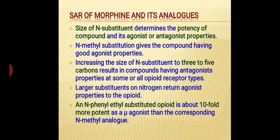If a phenylethyl substituent is present at the nitrogen atom, then the compound is 10-fold more potent as a mu receptor agonist than the corresponding N-methyl analog. This particular discussion can be summarized in the form of a table.